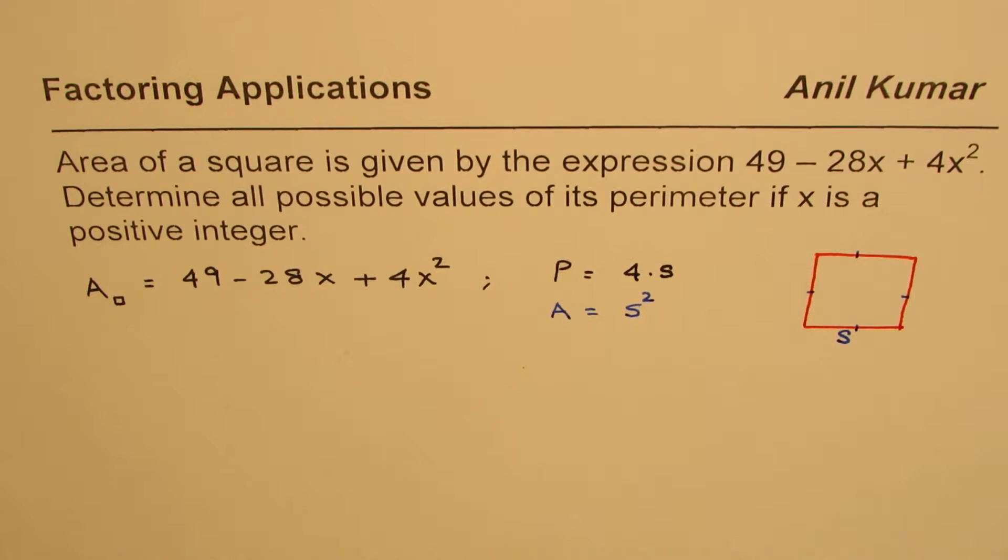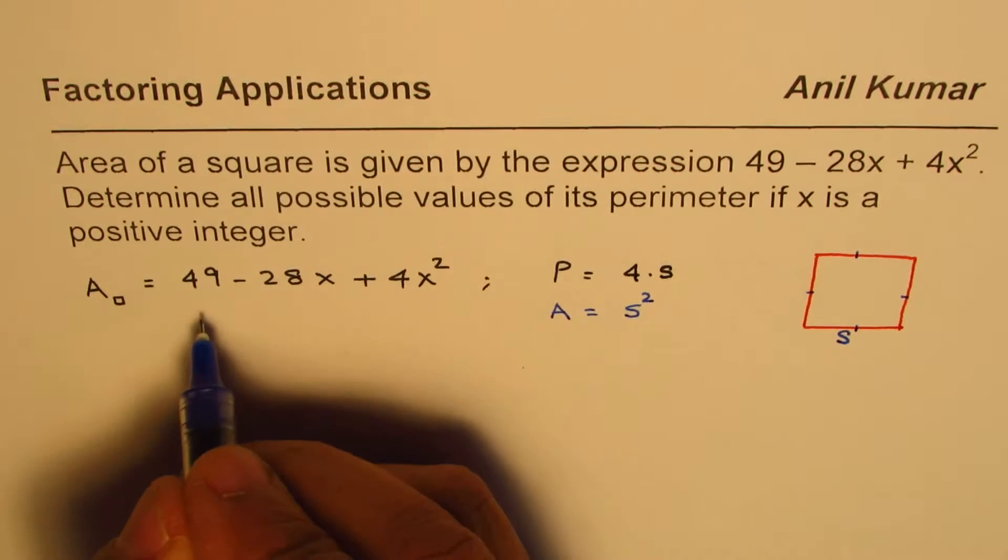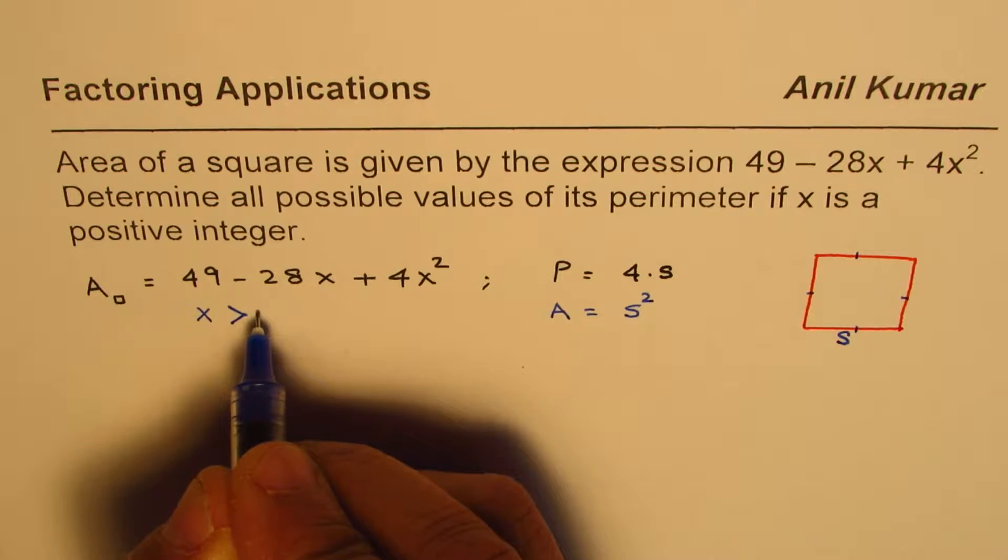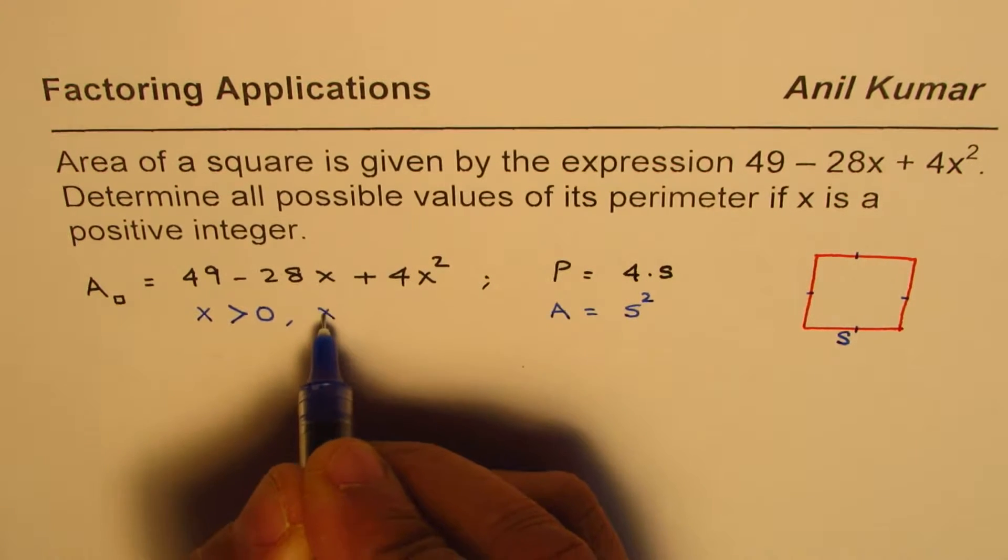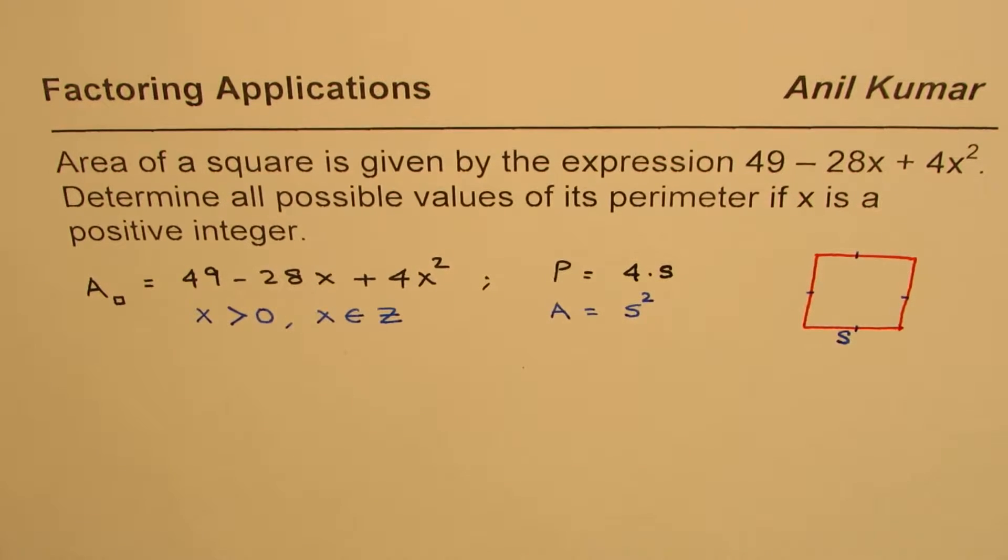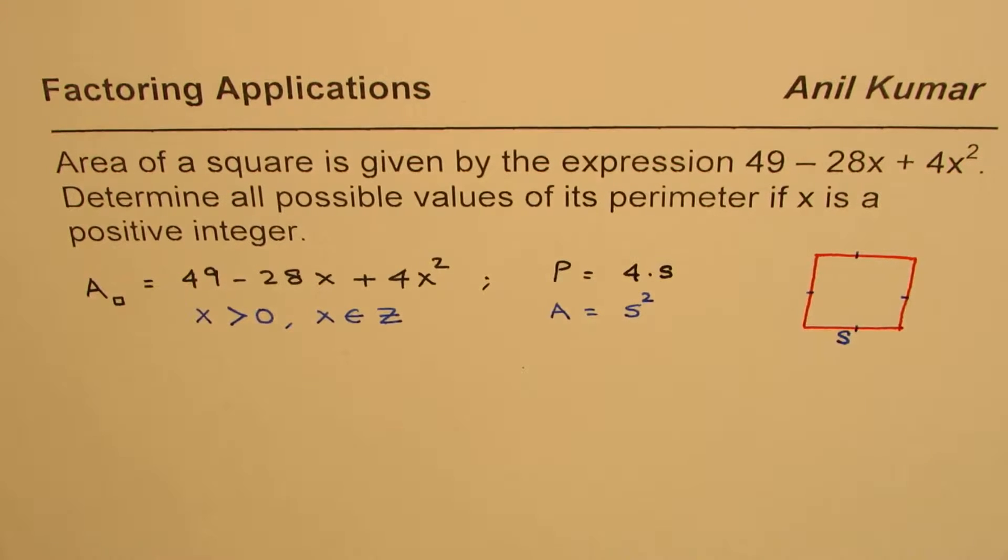We need to find the perimeter, and we are given that x is a positive integer. So x is positive integer means it is greater than zero and x belongs to integers. That is to say x can have values like 1, 2, 3, 4 and so on, like natural numbers. I hope the question is absolutely clear. At this stage, you can pause the video and answer the question.